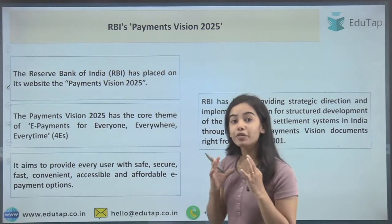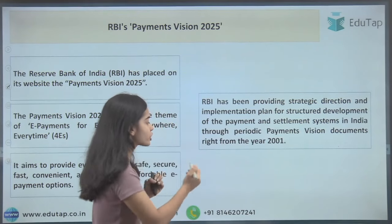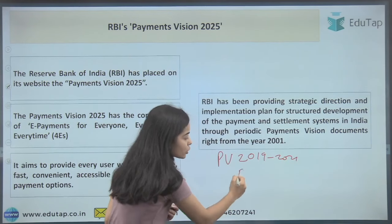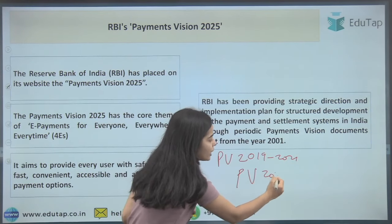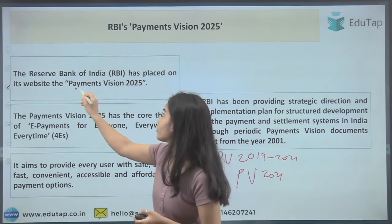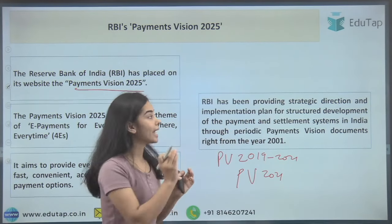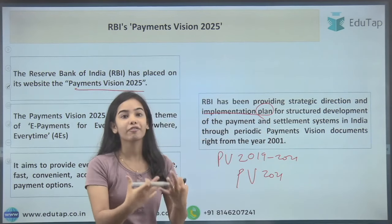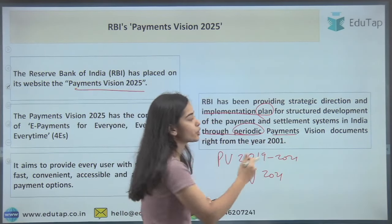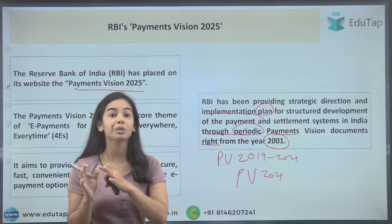Is this the first time a Payment Vision document has been released? No. The previous Payment Vision document was from 2019 to 2021, called Payment Vision 2021. The current document is Payment Vision 2025. RBI has been providing strategic direction and implementation plans for the structured development of the Payment and Settlement System through periodic Payment Vision documents right from the year 2001.